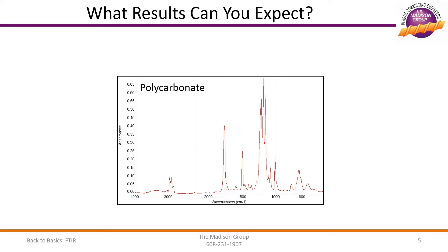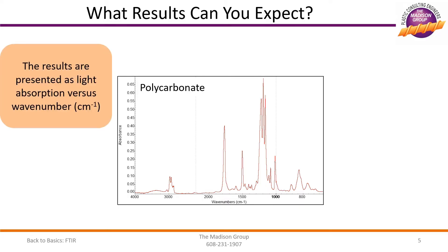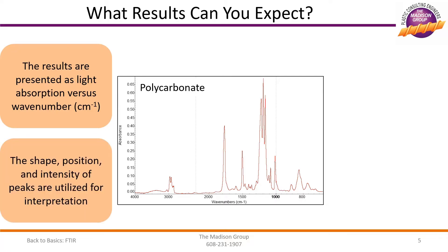This is a typical absorption spectrum that the material analyst will receive from the equipment. The results are presented with intensity on the y-axis and wave number on the x-axis. This graphical representation shows the amount of energy that was absorbed by the sample at different wavelengths of energy. The location, shape, and height of the peaks are directly related to the types of chemical bonds in the material. All of these peaks and valleys are utilized for interpretation.